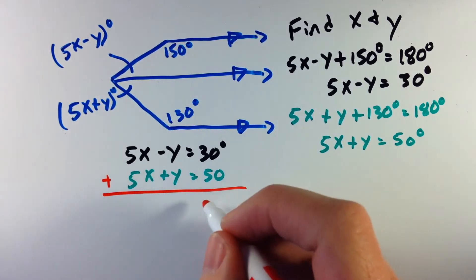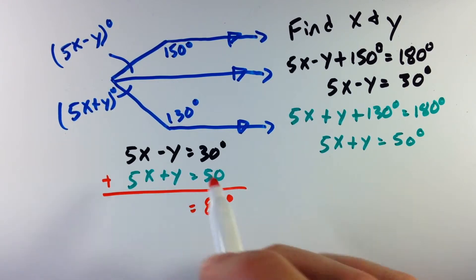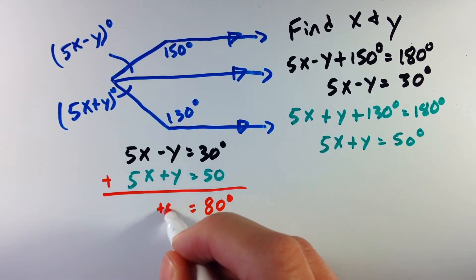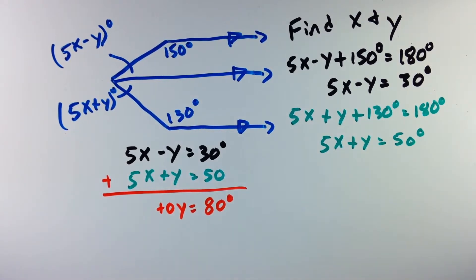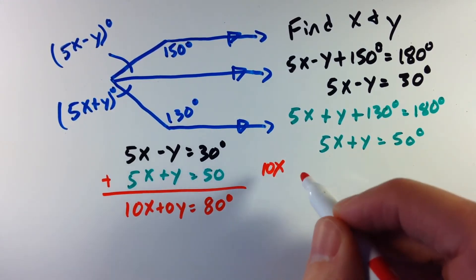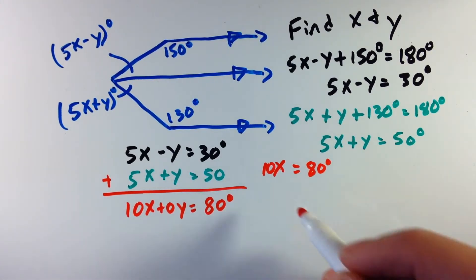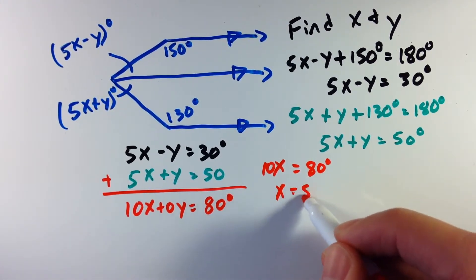And by adding these two equations, we have 30 plus 50 is 80. Negative y plus a positive y is just 0y. We don't have any more. They cancel each other out. And we're left with 10x. So this equation is simplified to be 10x equals 80. And so to get x by itself, x equals 8.